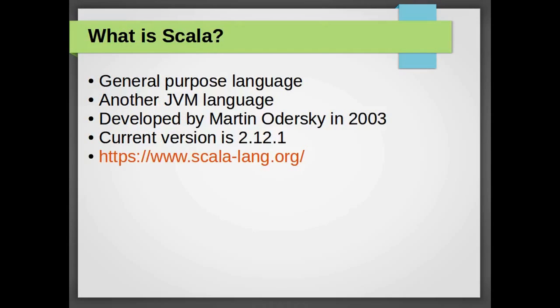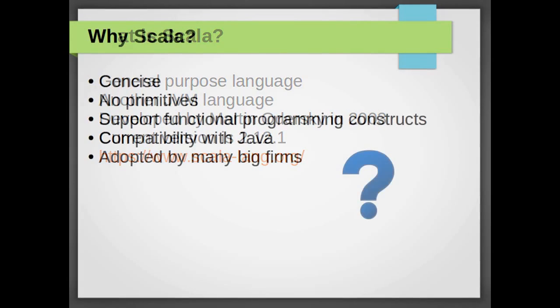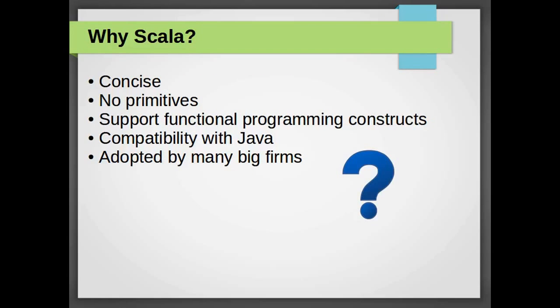Scala was developed by Martin Odersky in 2003. Scala is an acronym of scalable language. Martin Odersky has done a great job in marrying the functional paradigm to the object-oriented paradigm. Scala is a general purpose language and it is a JVM language. That means though Scala has its own compiler, it runs on Java Virtual Machine. The current version of Scala is 2.12. You can get more details about Scala from www.scala-lang.org.